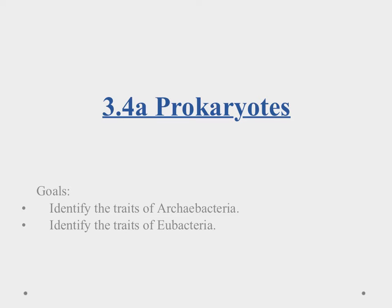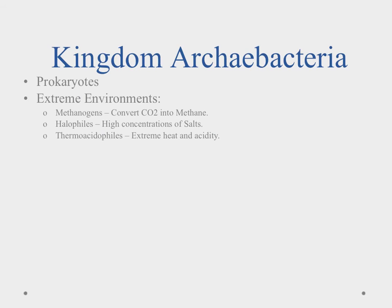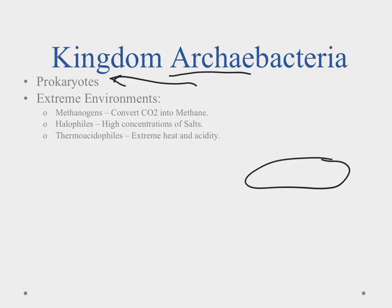Aloha and welcome to our video on the prokaryotes. In this video we'll look at the archaebacteria and the eubacteria. The archaebacteria — 'archa' means ancient, so we're looking at the older bacteria. These are prokaryotes, which means they have one membrane and everything is tucked inside of that one membrane. It's kind of like a cell where everything is just in there mixing together — not separated out. We'll learn more about that when we get into eukaryotic cells.